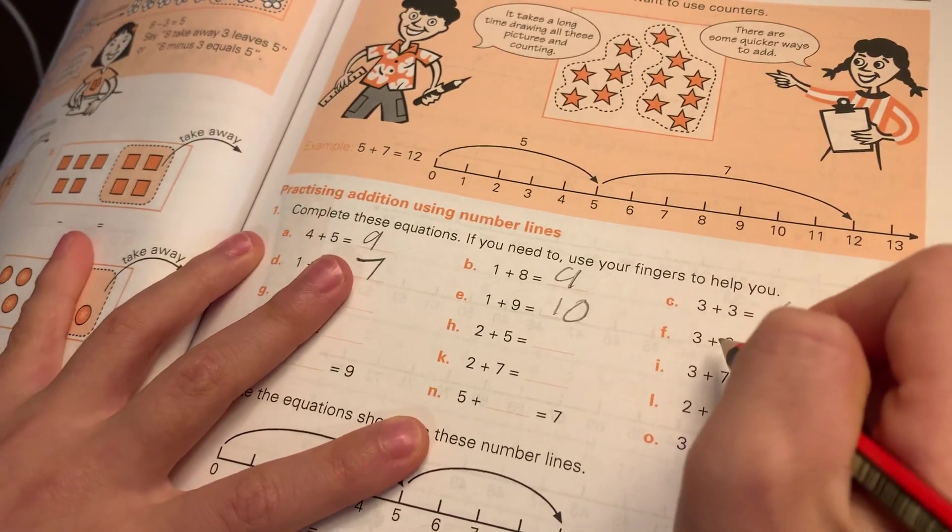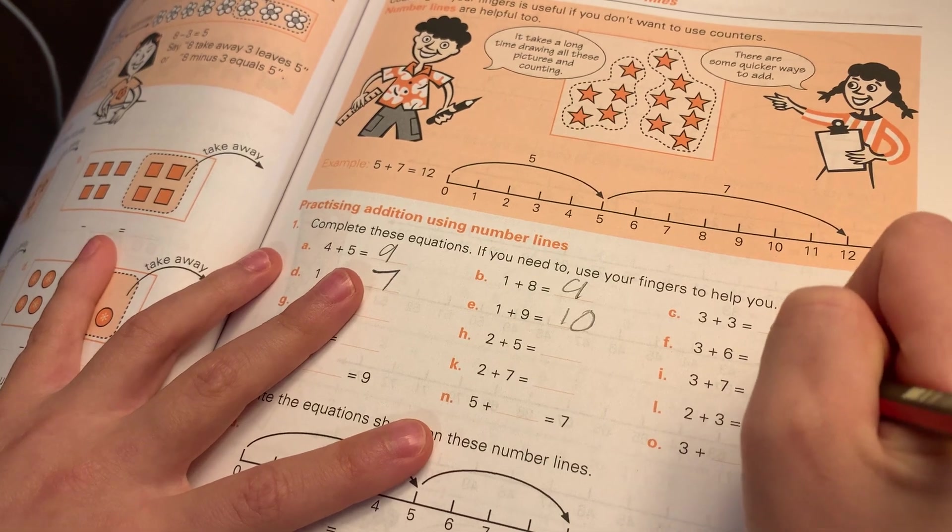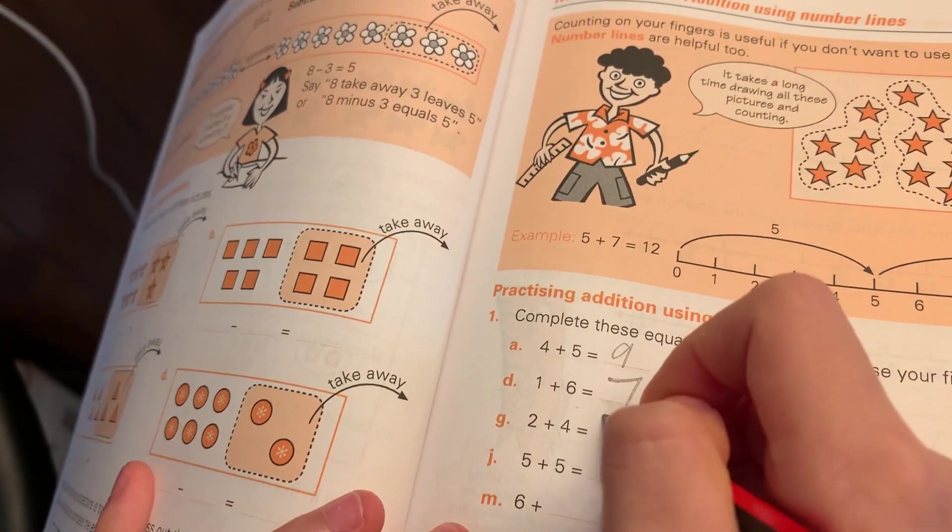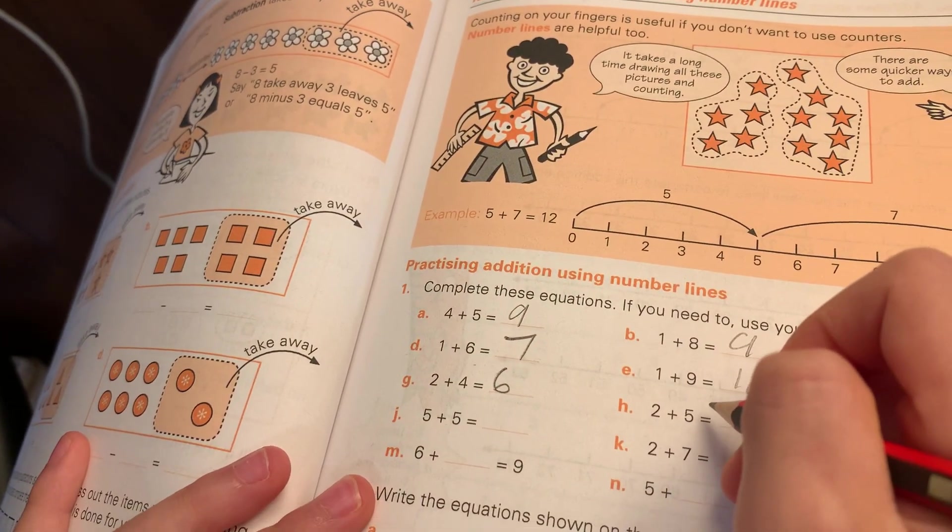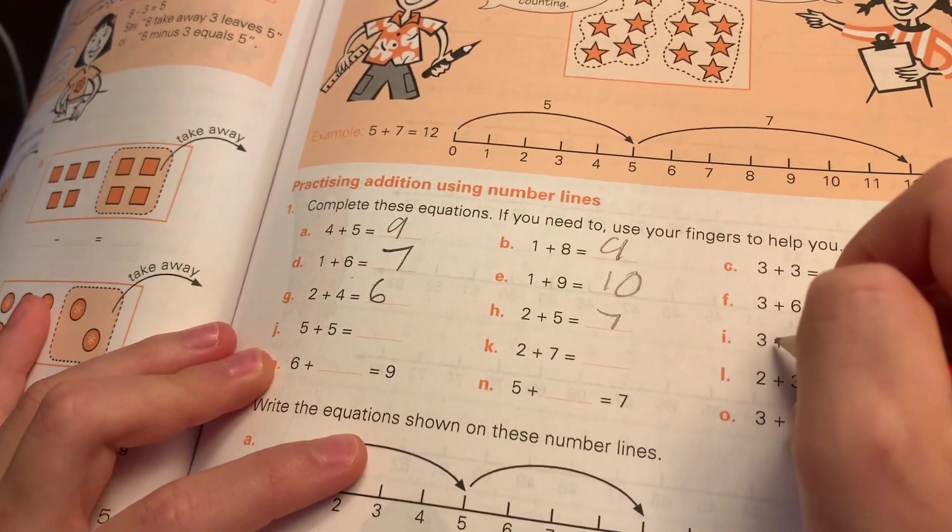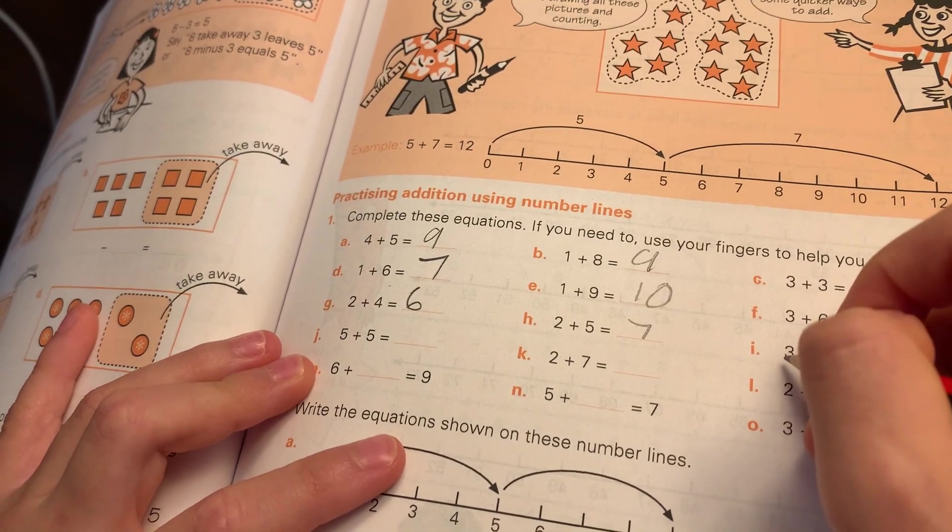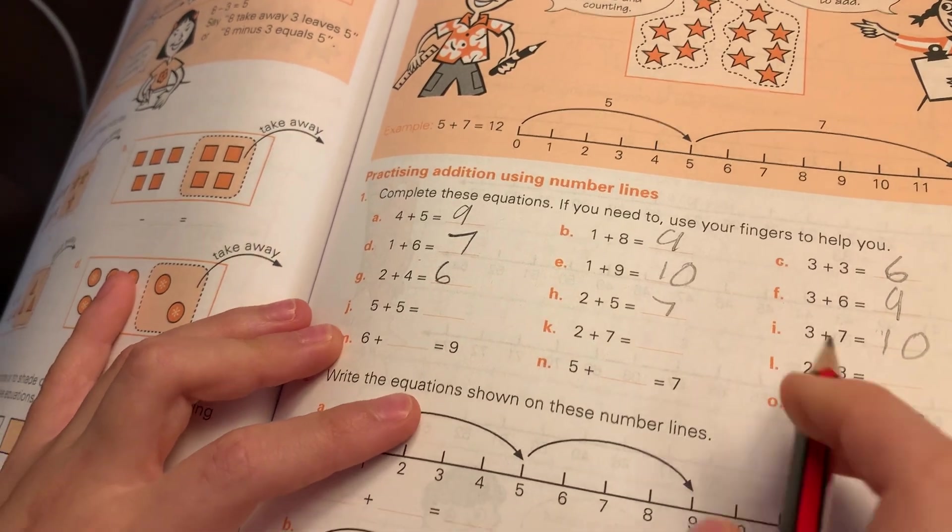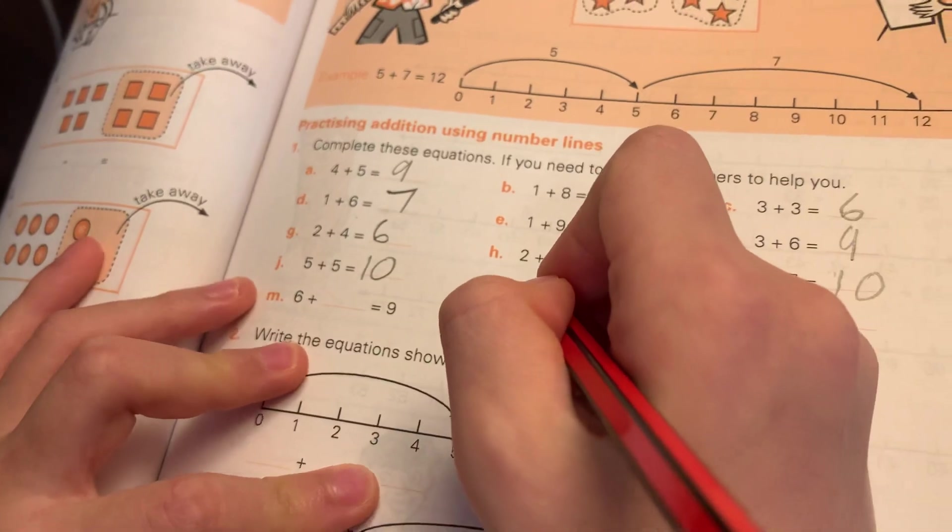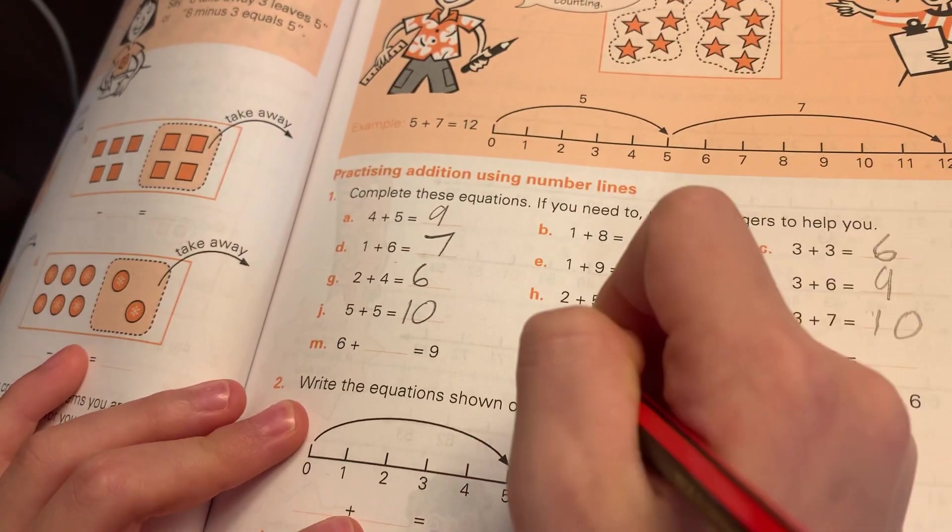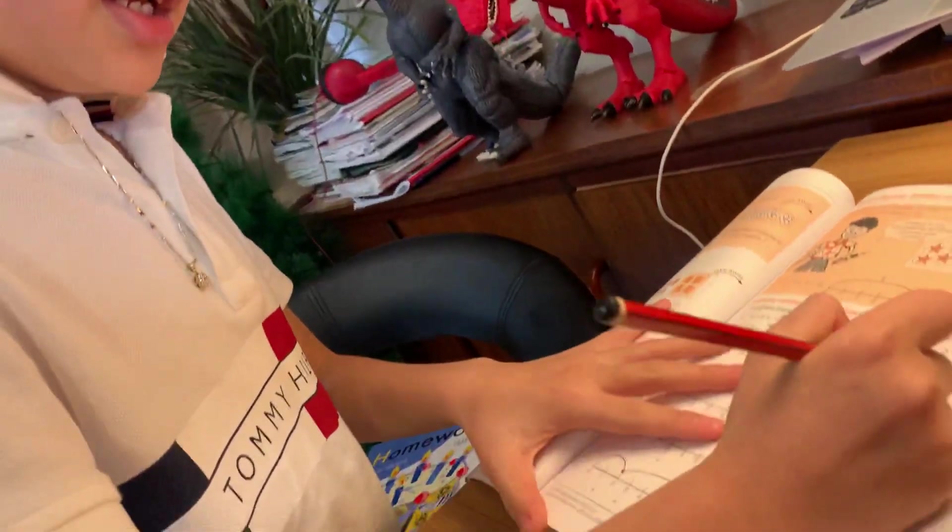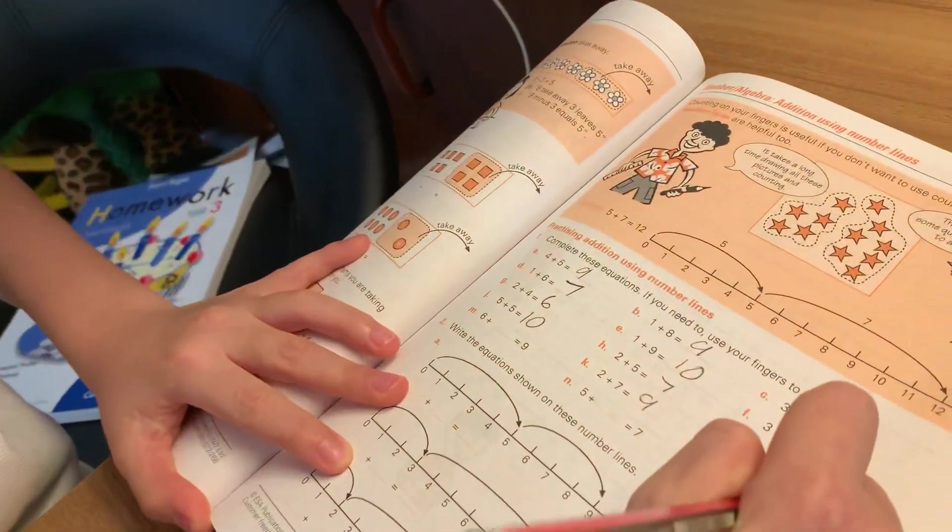And three plus six equals nine. Two plus four, the answer is six. Two plus five equals seven. Three plus seven equals ten. Write that as your answer here. Okay, ten. Number nine is two plus three equals five, so put it as your answer.